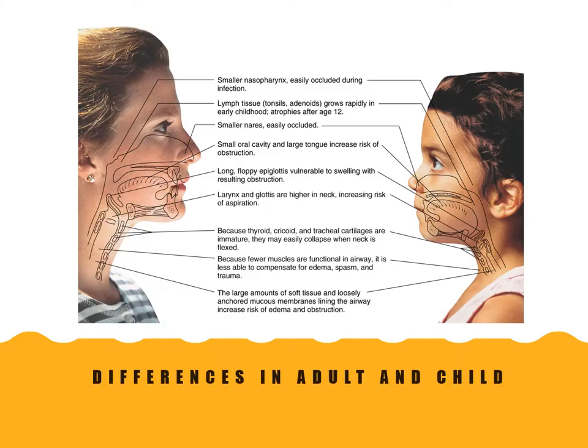With this picture you can see the differences in the adult versus the child. They have a smaller nasopharynx and nares, which makes it more easily occluded during infectious periods. Their tongue is quite a bit larger, which puts them at risk for obstruction. They also have a floppier epiglottis, which can result in swelling to that area.